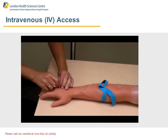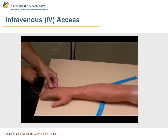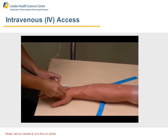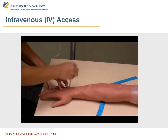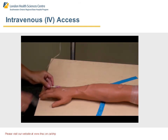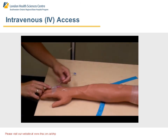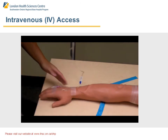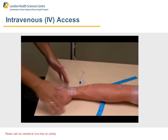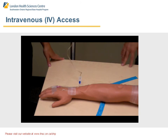Attach the IV tubing and then release the tourniquet. Open up the line and make sure that there's no swelling. Now attach the tegaderm and secure with tape. If an IV is interstitial, there are a few signs you can look for right away. The most obvious one is you won't get good drip out of the bag because of the increased resistance in the tissues versus the vein. You'll often see soft tissue swelling around the area of the IV catheter, which indicates that the fluid is going into the soft tissues and not into the vein itself.